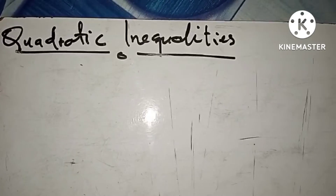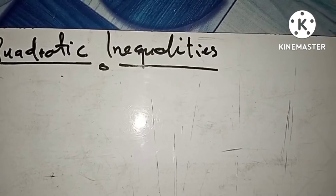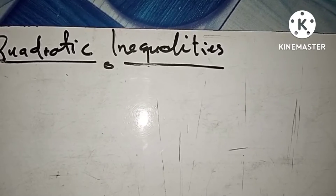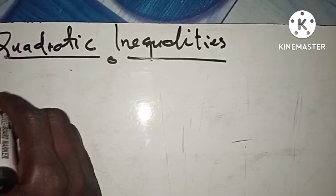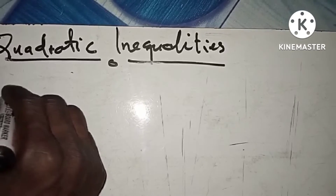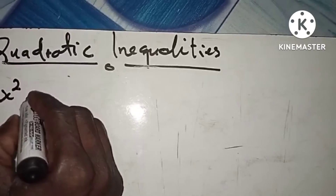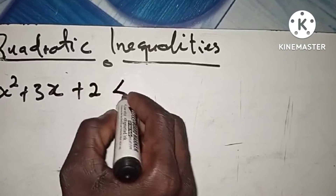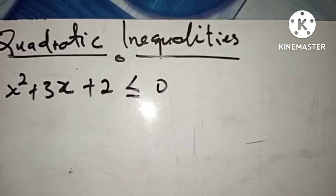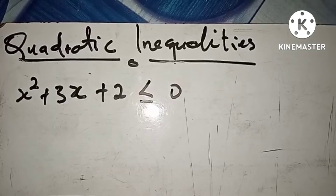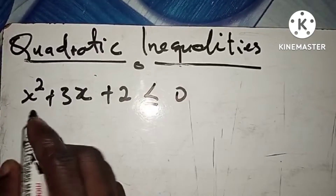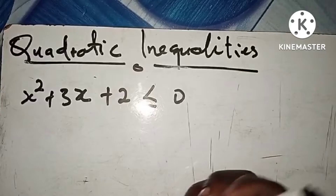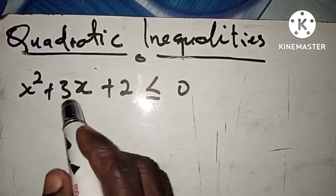According to the question, we are told to find the set of values of x that satisfy the inequality. The inequality we have is x squared plus 3x plus 2, less than or equal to zero. We are going to find the values of x so that this inequality is satisfied.